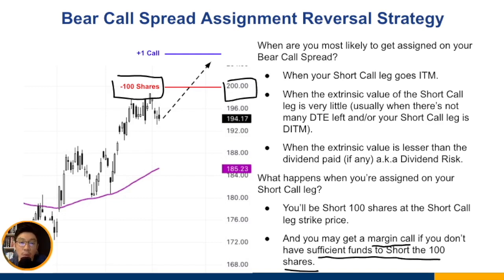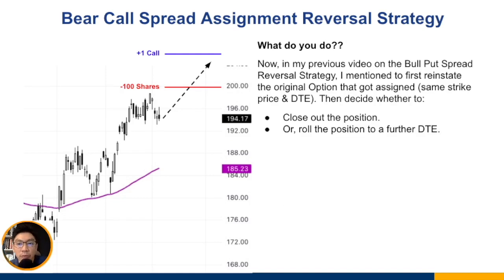You may get a margin call if you don't have sufficient funds to short the 100 shares. Now, in my previous video on the bull put spread reversal strategy, I mentioned to first reinstate the original option that got assigned — the same strike and same DTE — then decide whether you want to close out or roll to a further DTE. But some people asked why not just straightaway close out or roll to a further DTE?